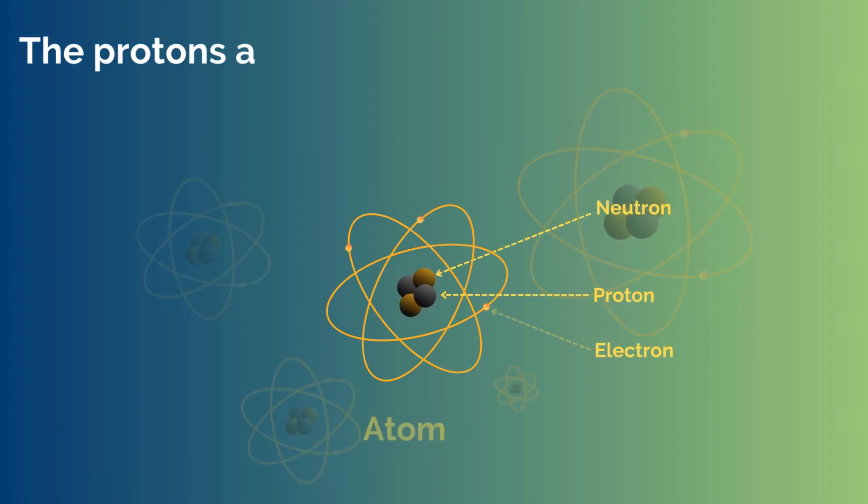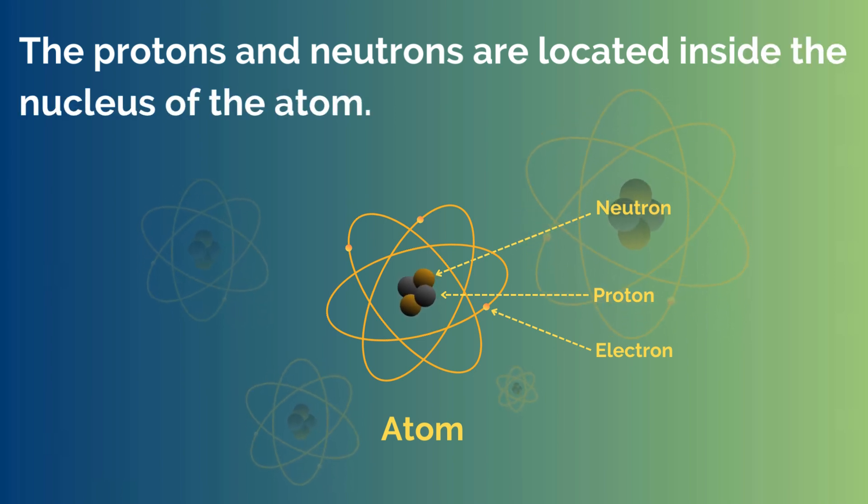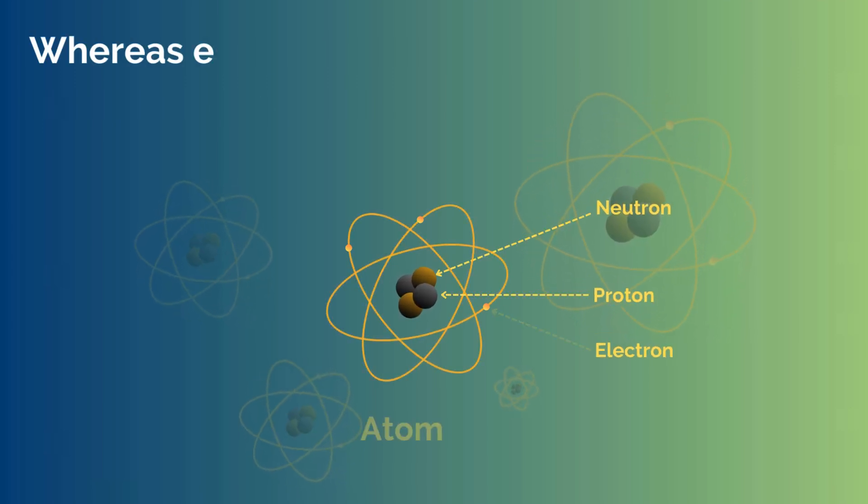The protons and neutrons are located inside the nucleus of the atom. Whereas, electrons are found revolving around the nucleus in the shell.